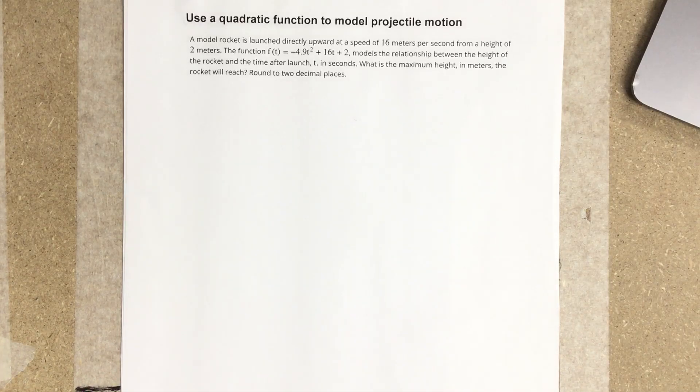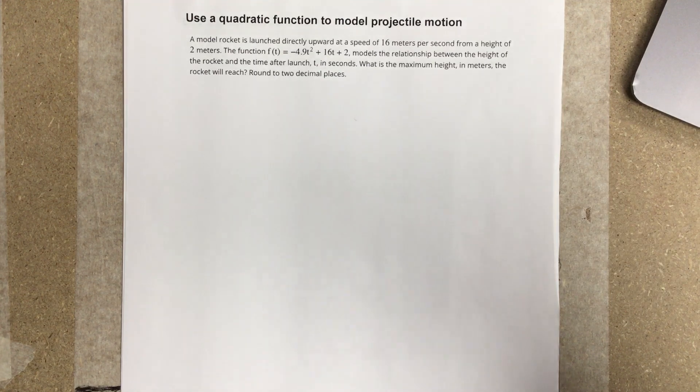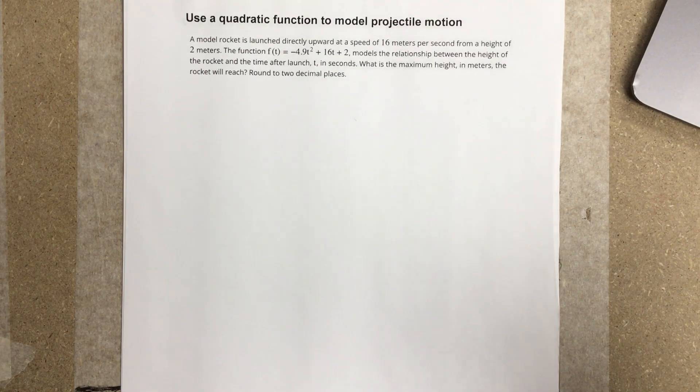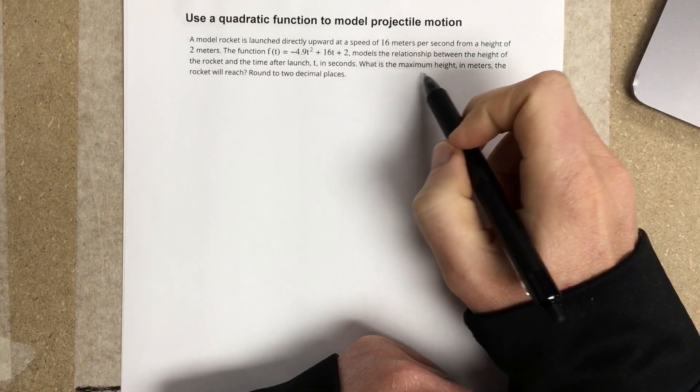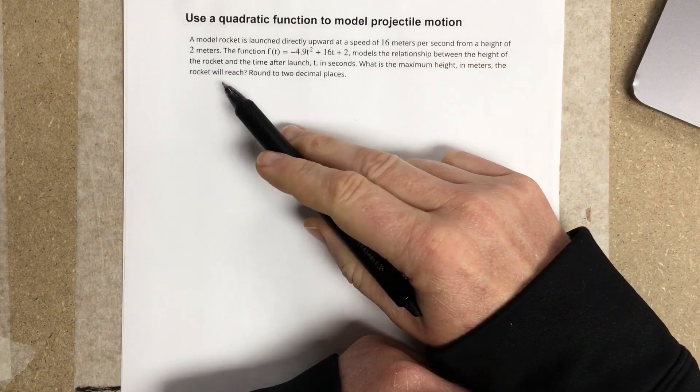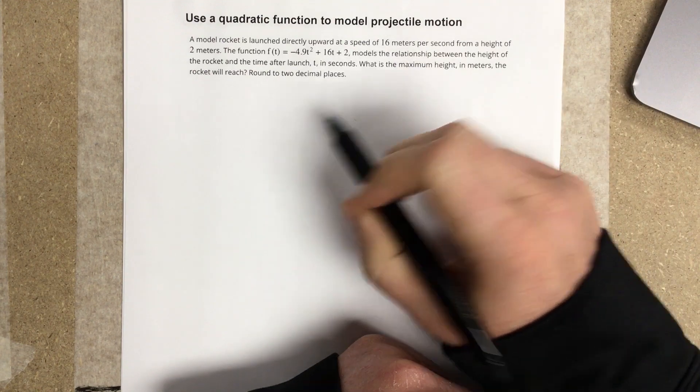In this video, we're going to use a quadratic function to model projectile motion. A model rocket is launched directly upward at a speed of 16 meters per second from a height of 2 meters. The function f(t) = -4.9t² + 16t + 2 models the relationship between the height of the rocket and the time after launch, t in seconds. What is the maximum height in meters the rocket will reach? Round to 2 decimal places.